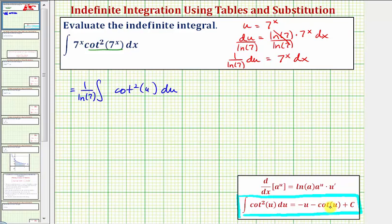We can easily find our antiderivative in terms of u and then write that in terms of x. So the antiderivative in terms of u would be one over natural log seven times negative u minus cotangent u, and of course plus c, the constant of integration.